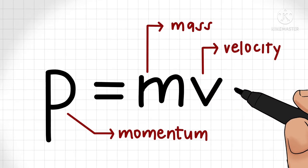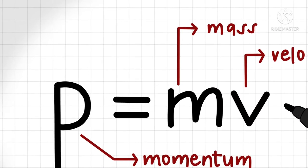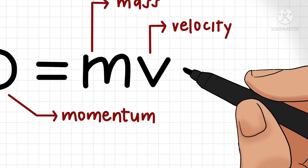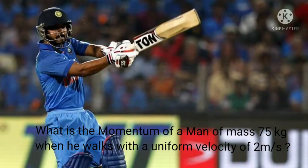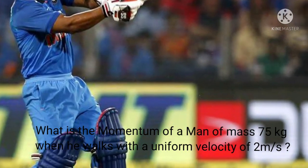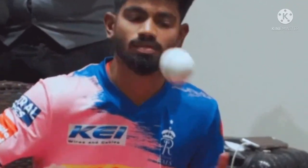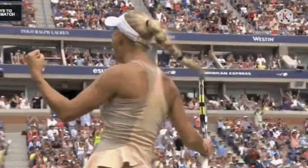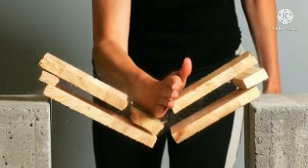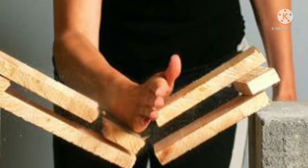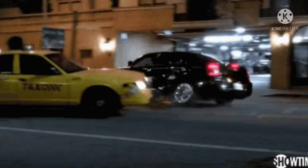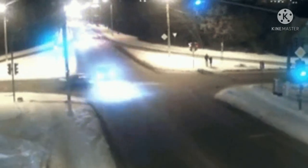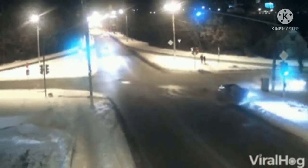Let us solve a numerical: What is the momentum of a man of mass 75 kg when he walks with a uniform velocity of 2 meters per second? Momentum p = m × v, so p = 75 kg × 2 m/s = 150 kilogram meter per second.